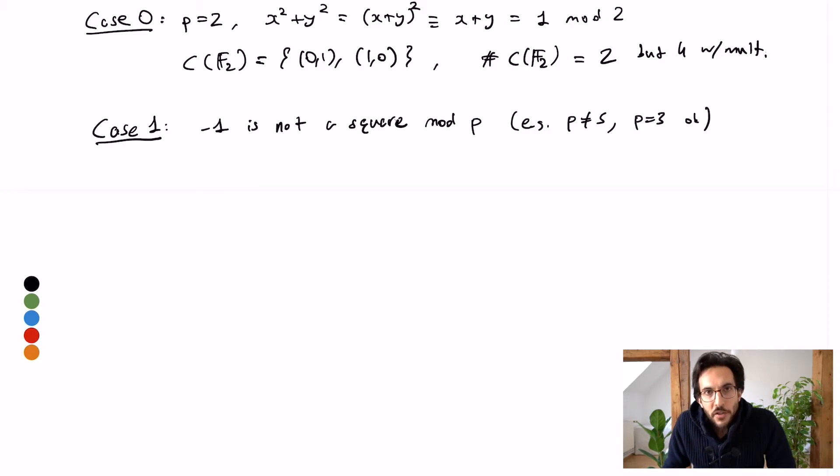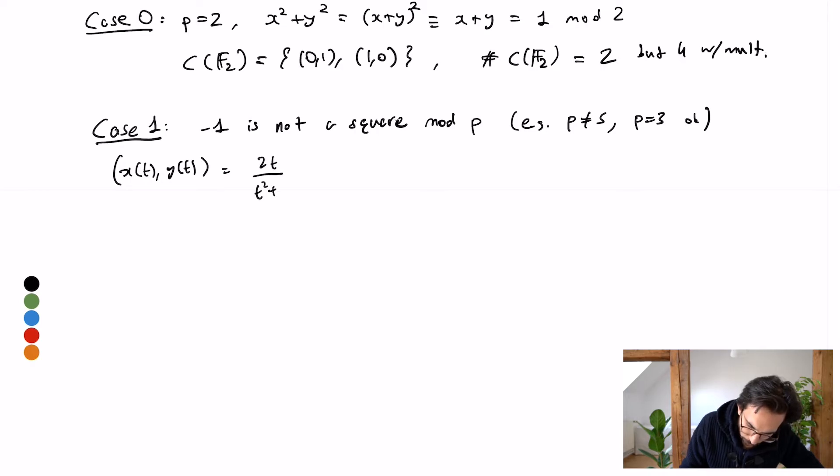Now in this case I can actually borrow what I did when I was trying to study the rational points on my circle. I can just say, well, remember the maps that I just constructed: x(t), y(t). Those were 2t over t squared plus one and t squared minus one over t squared plus one. So this defines a map from F_p onto the circle minus the north pole, just like it did with the real case.